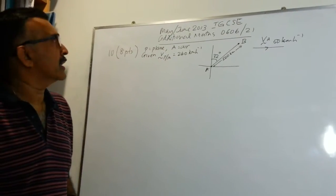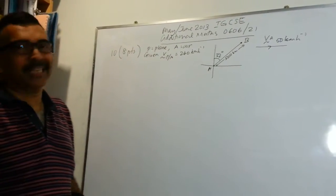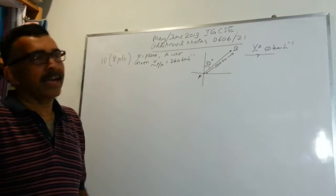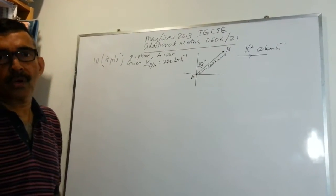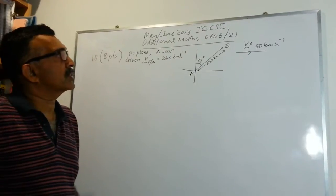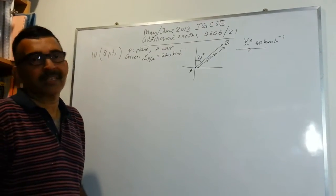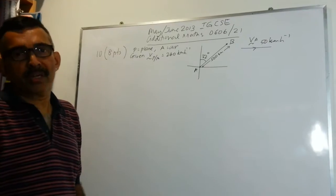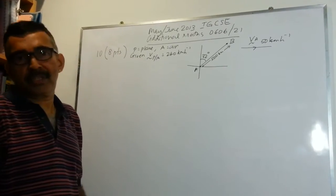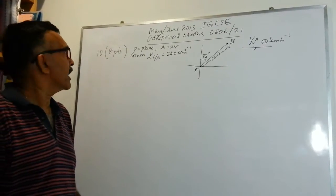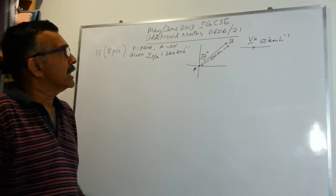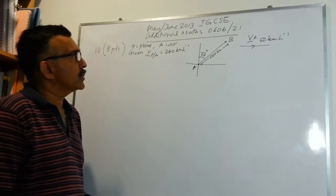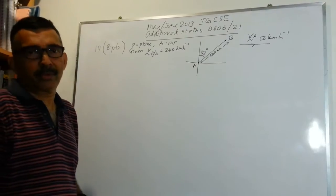We are looking at question number 10 in the IGCSE Additional Math paper, code 0606-21, May-June 2013. This question carries 8 points and involves relative velocity. So let's read the question first.